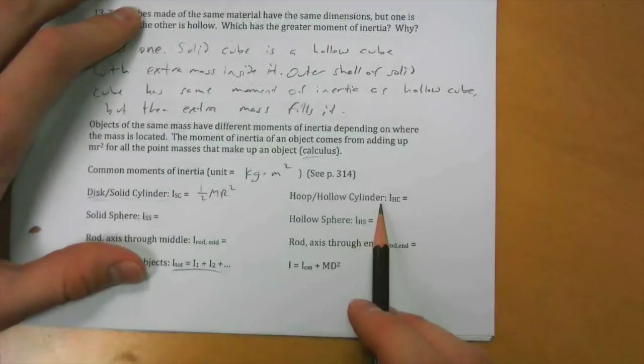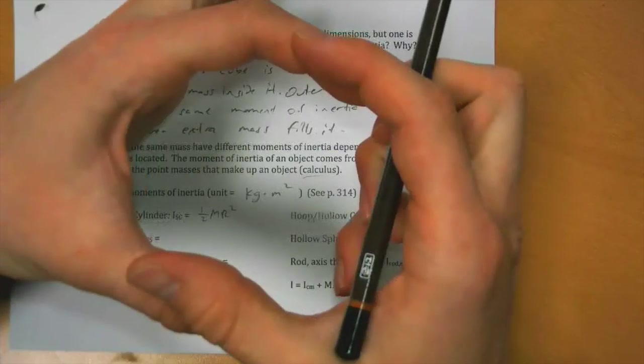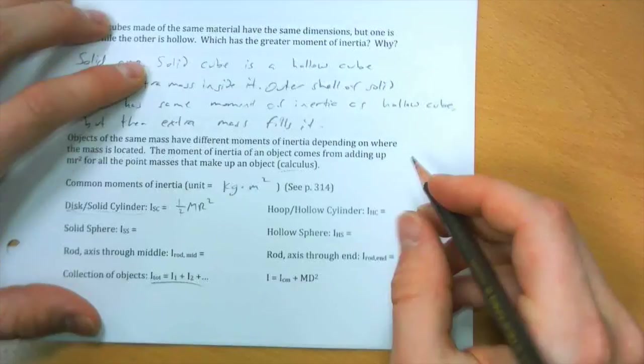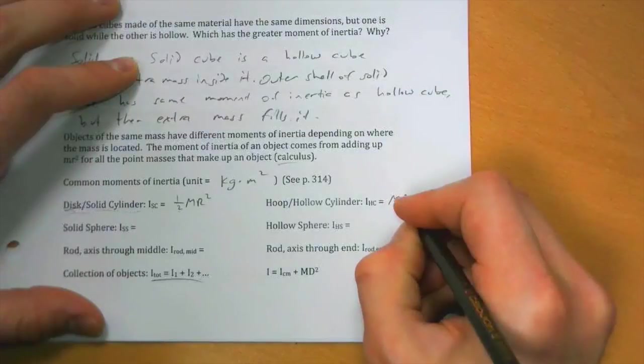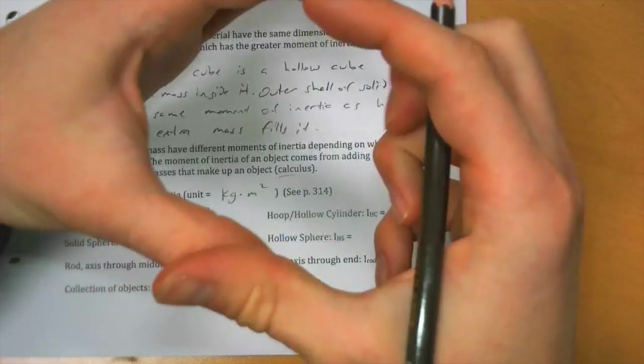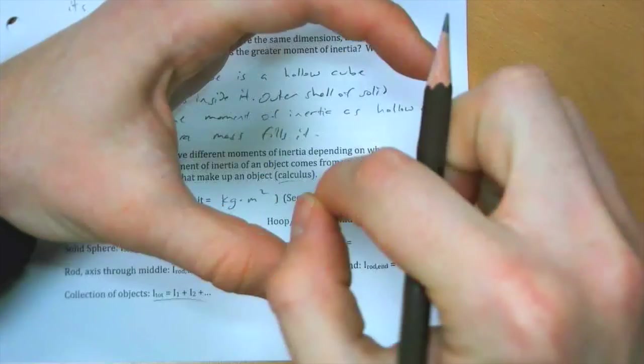A hoop or hollow cylinder, so if you just have a ring shape where there's only mass around the outside, has a moment of inertia of MR squared. It's basically like a point mass. All the mass is located that distance R away from the center.